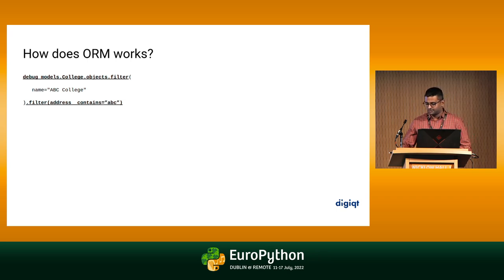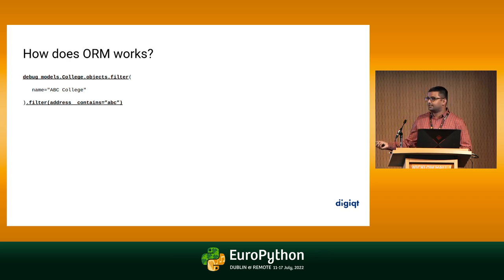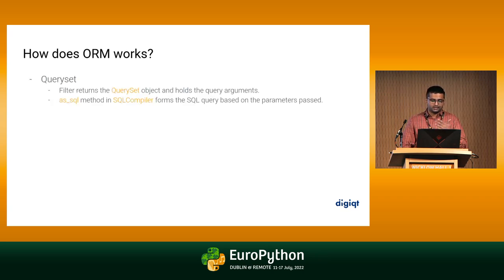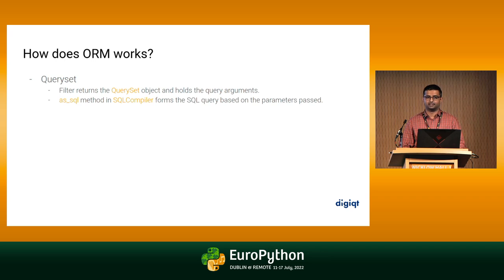Let's see how QuerySet chaining works. When we do filter().filter() or filter().update(), each .filter() returns a QuerySet object. Internally Django is doing no database operations during chaining — it is just updating class variables with the new filter conditions. Only when we perform an actual operation does the SQL compiler get called, converting all accumulated conditions into a raw SQL query, then executing it via the database wrapper.